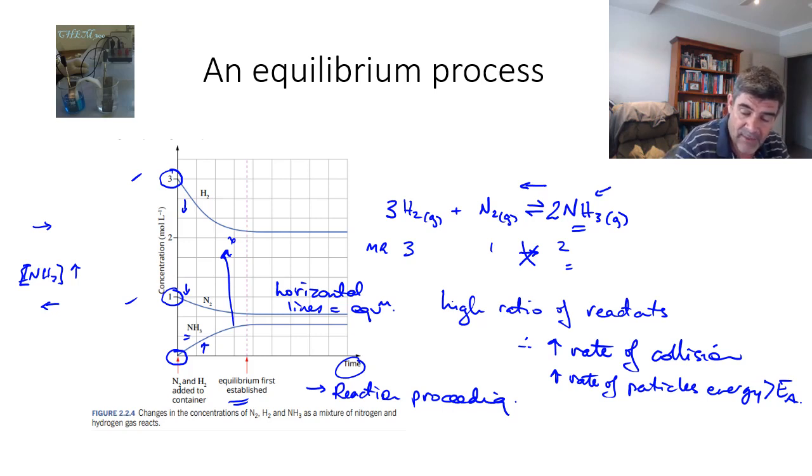There's no more change in the macroscopic properties of the system. This is how we use our understanding of collision theory of particles bouncing into each other, creating chemical reactions, and the fact that this occurs not just between the particles of the reactants, but also the particles of the products, until the rate of both the forward and reverse reactions are identical, and then we have equilibrium.